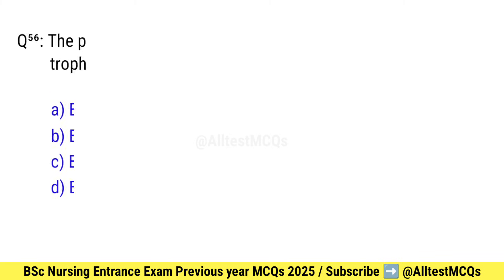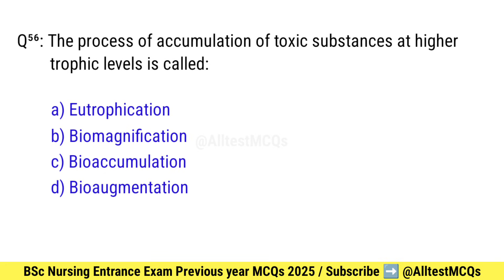Question number 56. The process of accumulation of toxic substances at higher trophic levels is called what? Correct option is B: Biomagnification.